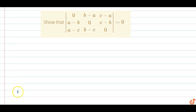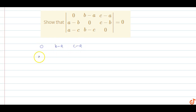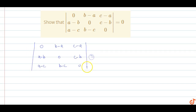In this question, we need to determine the value of this determinant equal to zero. The determinant can be written as: zero, b minus a, c minus a; a minus b, zero, c minus b; a minus c, b minus c, zero. We can rewrite this as zero, b, c; a, zero, c; a, b, zero.